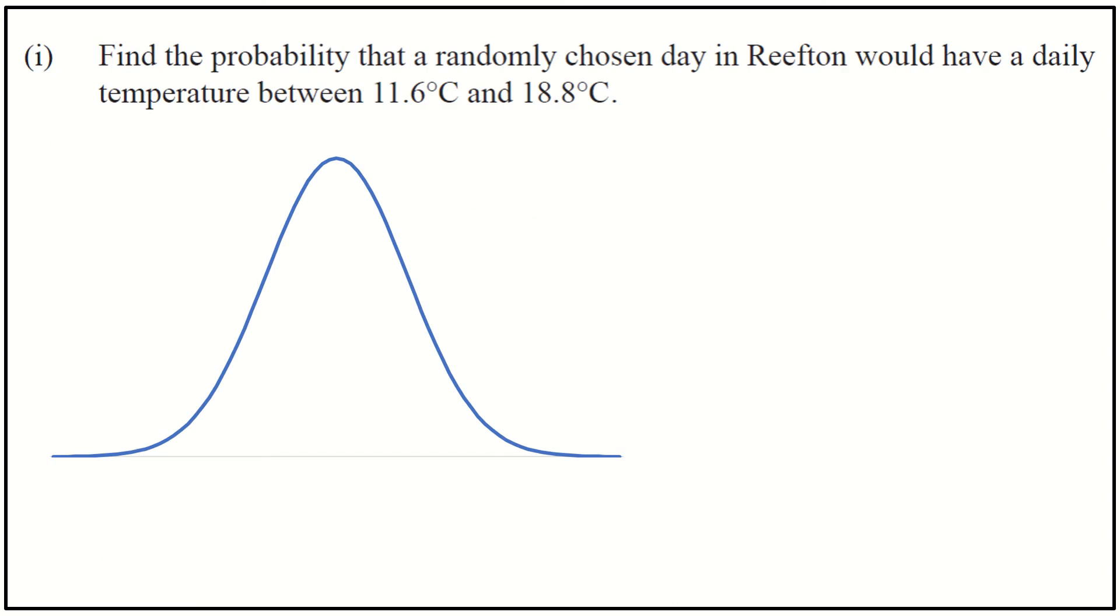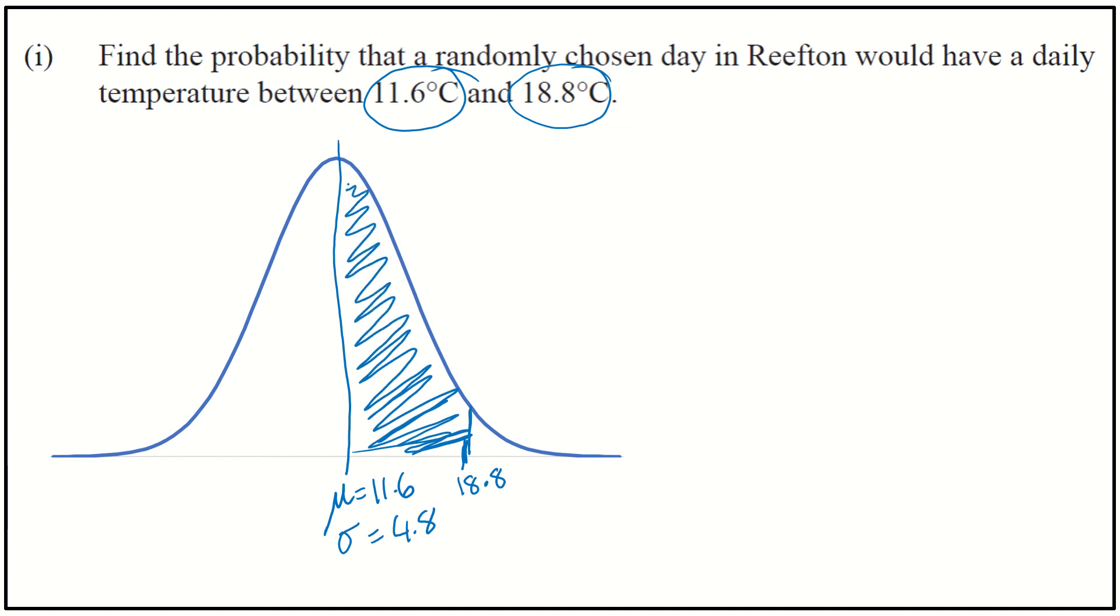The question for Part 1 is to find the probability that they've got a daily temperature between 11.6 and 18.8. I'm going to put my mean in the middle there at 11.6, with standard deviation of 4.8. I want to go between 11.6 and 18.8. My x-axis is my number line, so 18.8 is going to be somewhere up here. I want it to be between these values, so I want that area there.